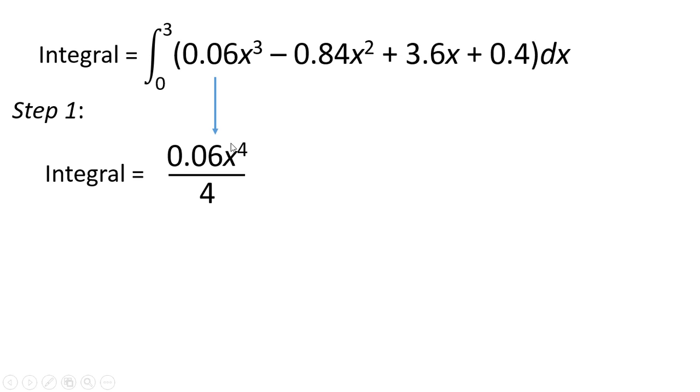And for this one, we have x to the 3, so now we go to x to the 4, and divide by 4, and we still keep this 0.06 as well. Then we can do this for the x squared term, it goes to a cube, and divide by 3. The x term goes to an x squared, and the 0.4, the constant term here, becomes 0.4x.